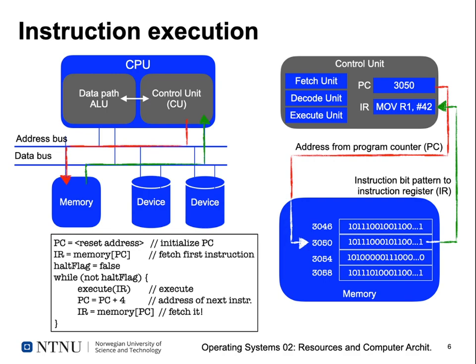In the subsequent stages, the instruction is decoded — the CPU figures out, for example, that it's a move command that moves the constant 42 into register R1, and then it can execute it. Optionally, if the instruction involves a memory access, such as storing a register value to main memory, the execute unit takes care of data transfer from the data path to memory, reading or writing. This is the algorithm performed in our very simple CPU model.